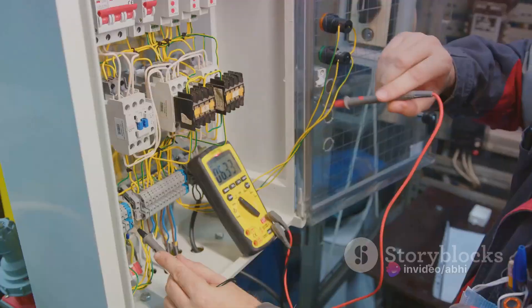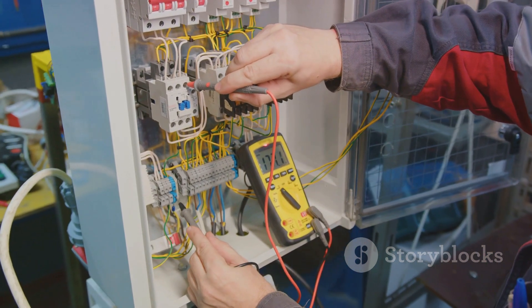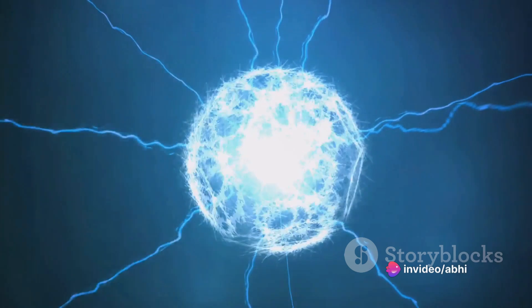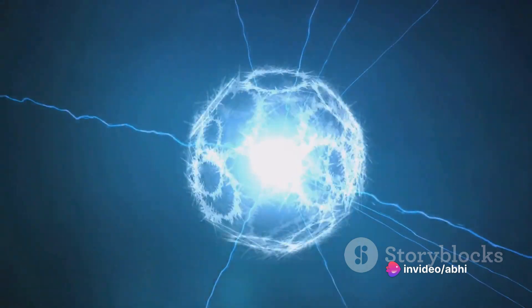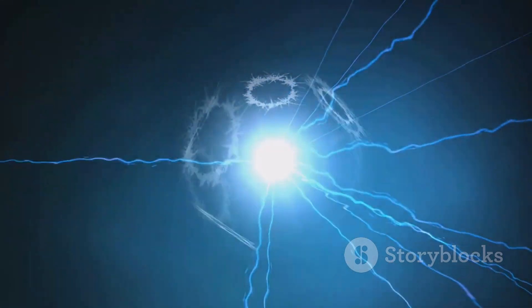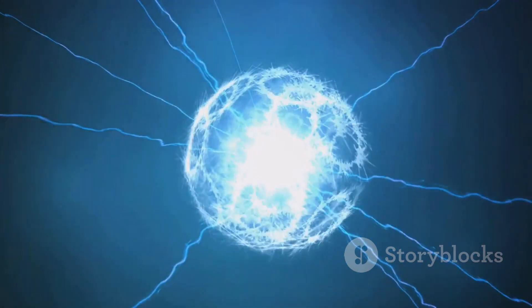For electricity to flow, there needs to be a difference in electric potential. The concept can be understood if we imagine a river. Water in a river flows from areas of high potential, the higher ground, to areas of low potential, the lower ground. Similarly, electricity flows from areas of high potential to areas of low potential.